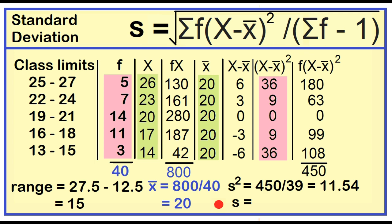The standard deviation is just the square root of the variance. The square root of 11.54 equals 3.40.